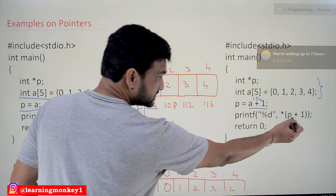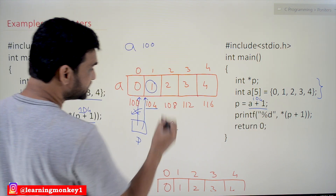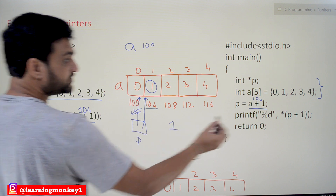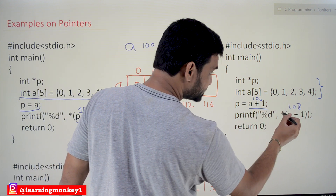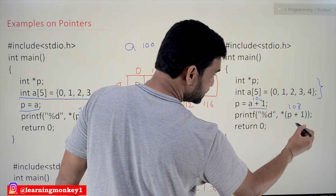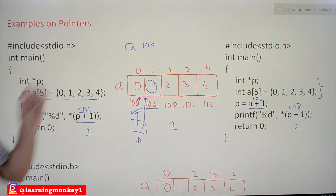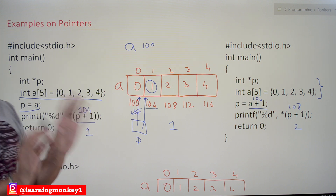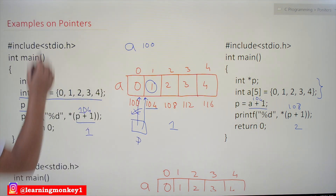So *(P+1) with P at 104 gives us address 108. The star means the value stored at 108, which is 2. So it is going to print 2. So far these concepts look straightforward, but the third example is going to differentiate a lot from the other two despite looking similar.